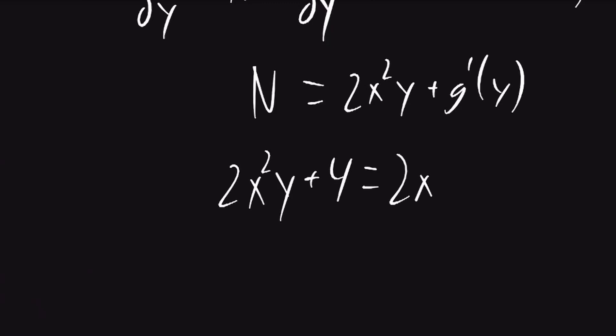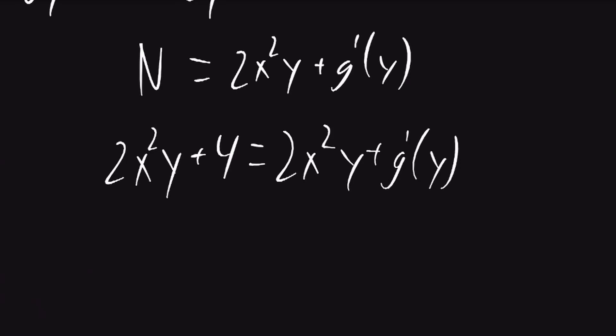And this is going to be equal to the term we just found. These two x squared y's will cancel. And we'll find that g prime of y is equal to 4.